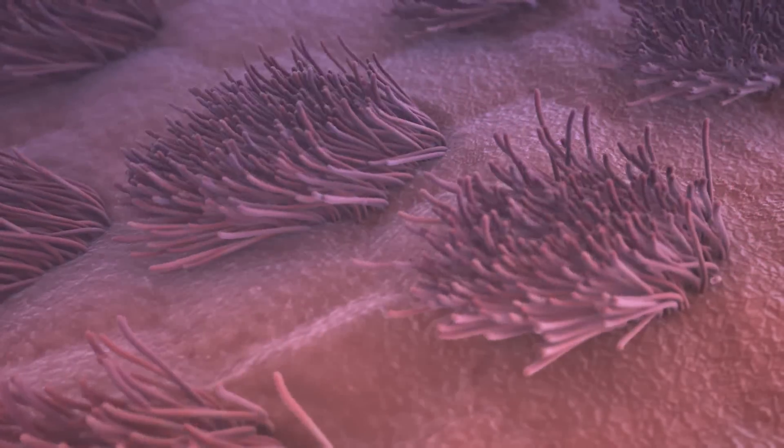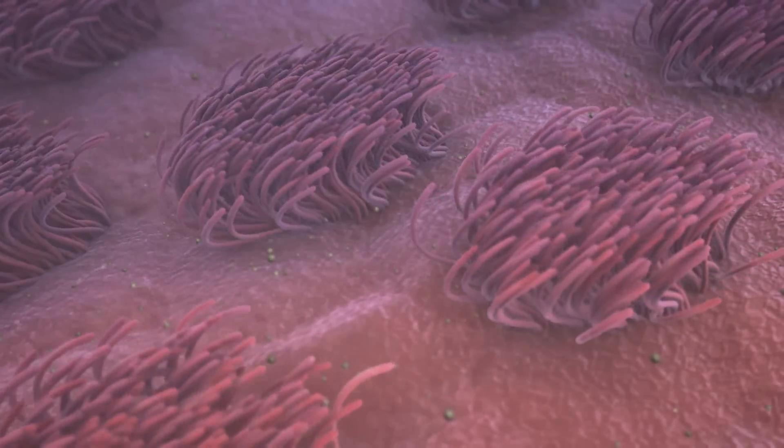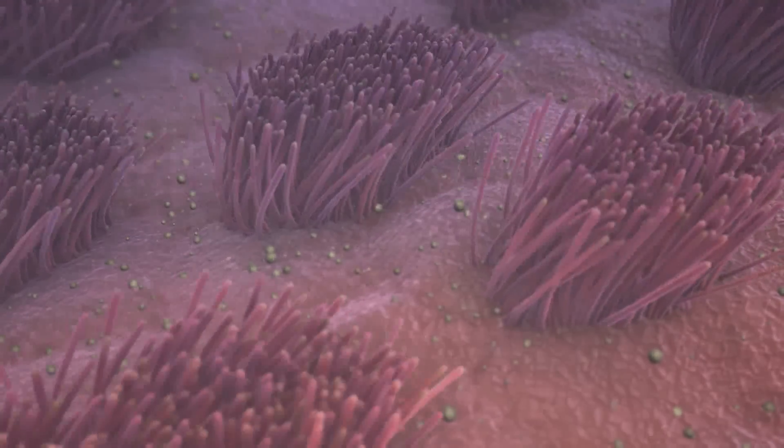We have millions of tiny hairs called cilia that sweep back and forth, transporting mucus away from the airways. The mucus traps the dust and germs in the air that we breathe in.